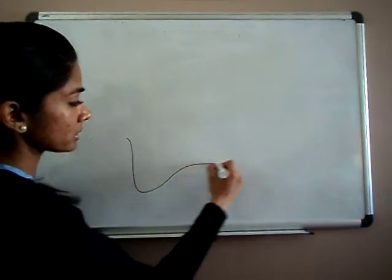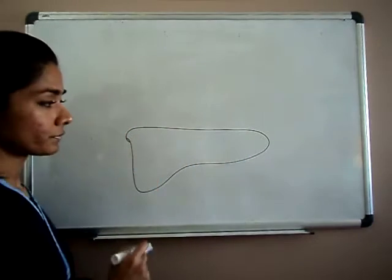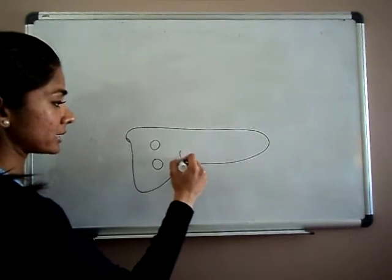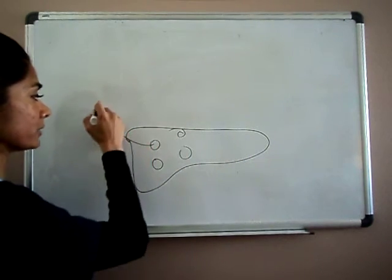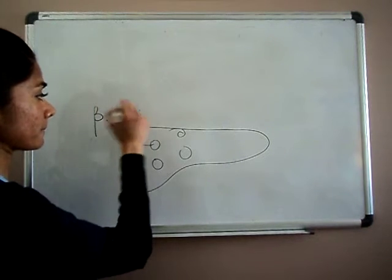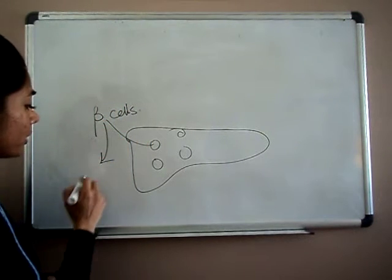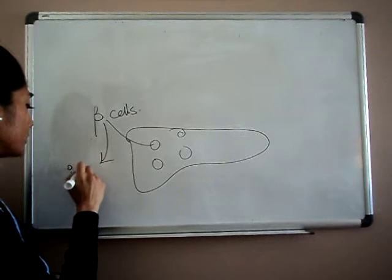Now if you imagine that this is your pancreas, there are cells on the pancreas called beta cells, and what beta cells do is they produce a hormone called insulin.